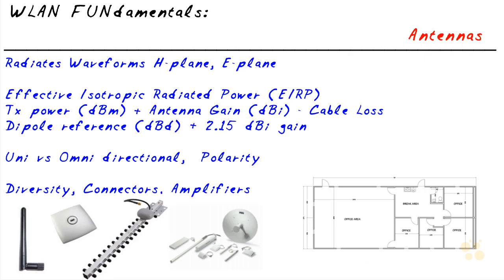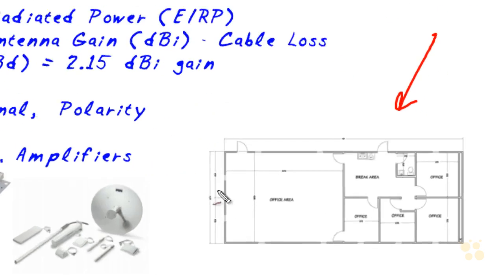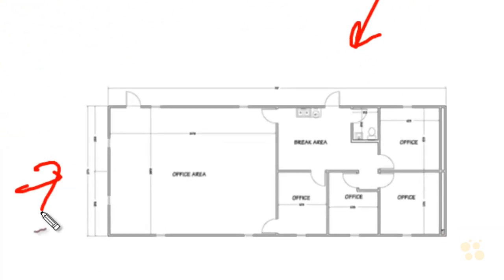Imagine that you and I have joined forces to do wireless implementations and the company that owns this wireless space has hired us to implement a wireless local area network. We already know a couple of things: we're going to use an access point for infrastructure mode, and that access point is going to need some type of antenna to radiate or generate the signal that's going to be propagated through the wireless space.